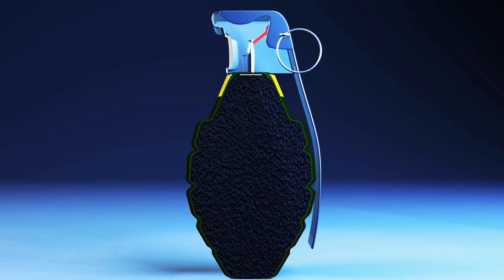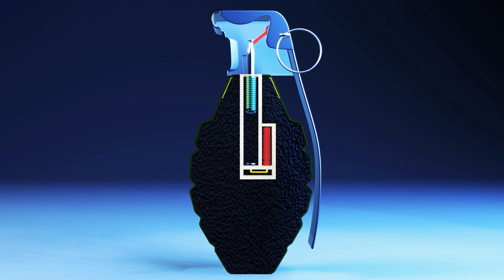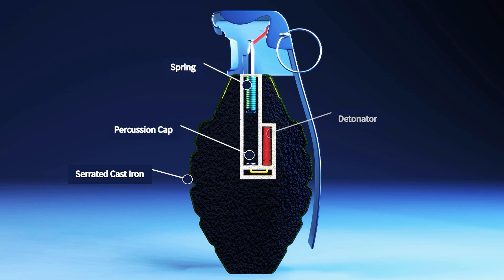Let's start with the basic anatomy of a hand grenade. The outer shell of a grenade is made of serrated cast iron. Inside the shell, there's a spring, a percussion cap, and a detonator.